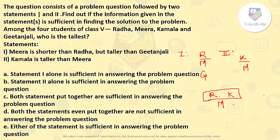So we cannot find out who is taller from both of the statements given. So the answer will be both the statements even put together are not sufficient in answering the problem question. That is D.